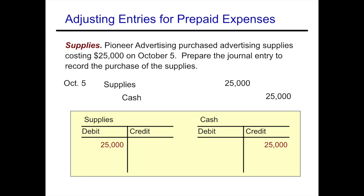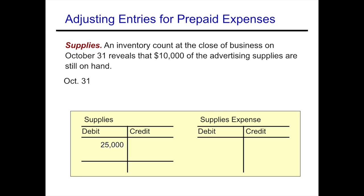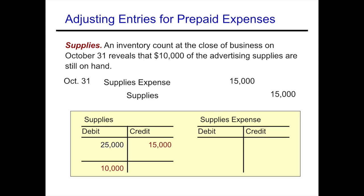Now let's look at an actual adjusting entry for supplies. We took a count of inventory at the close of business on October 31st and found that we had $10,000 of supplies left. We don't record the $10,000 ending balance — that's not a transaction. Looking at our T-account, we started with $25,000 and have $10,000 left, so we must have used up $15,000. We credit supplies for $15,000 and debit supplies expense for $15,000.